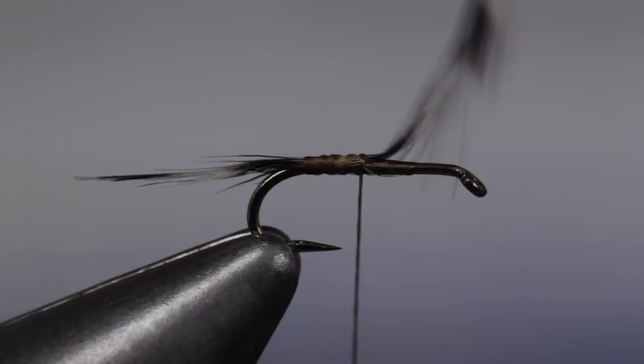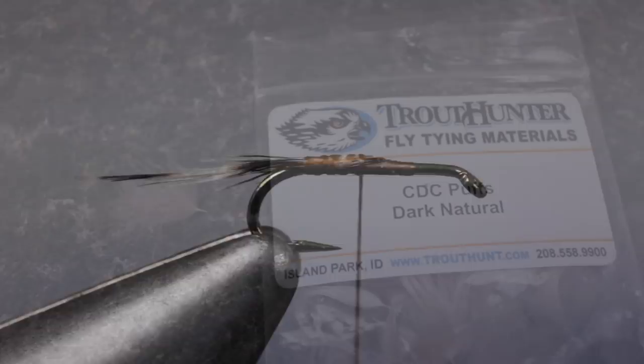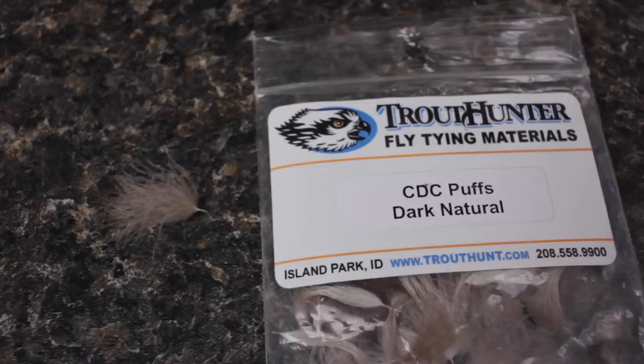A single dark natural CDC puff is used to form much of the remainder of this fly. The longer the fibers on the puff, the better. If there are any shorter fibers down toward the butt, carefully strip them off.